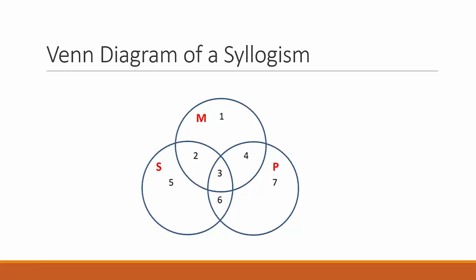To use a Venn diagram to represent a syllogism requires three circles, because there are three different terms in a syllogism: the subject, predicate, and middle term. Since the circles form more overlapping areas, it is convenient to number the areas for easy reference. Usually, the numbering begins with the top circle, which represents the middle term.